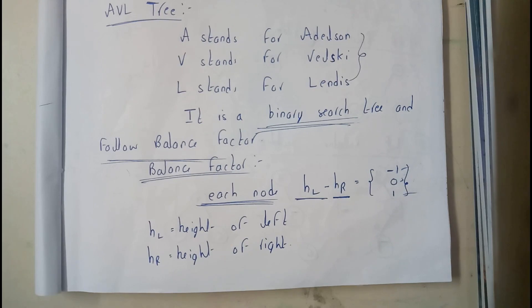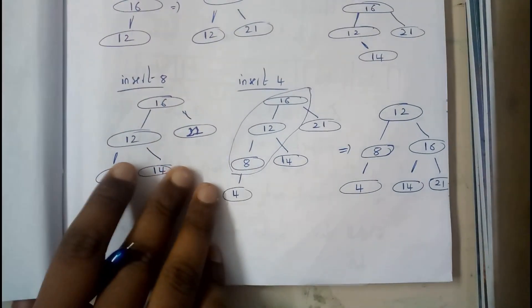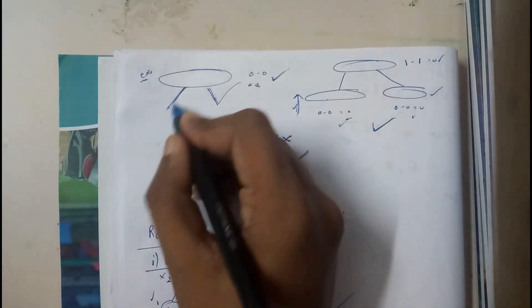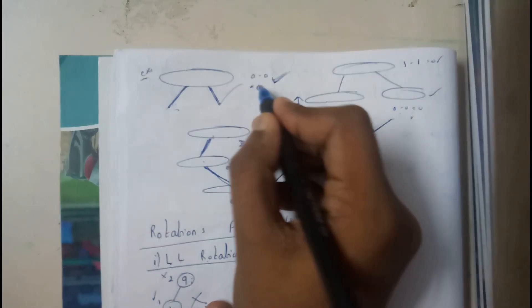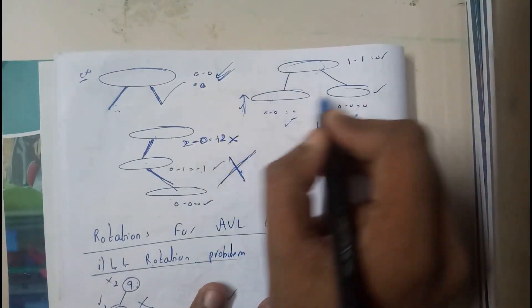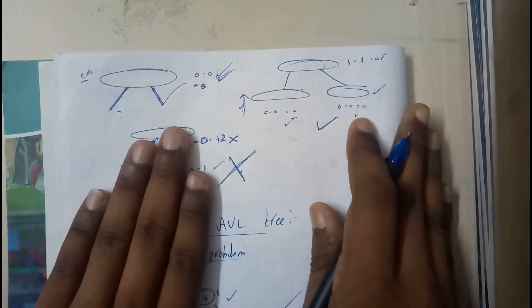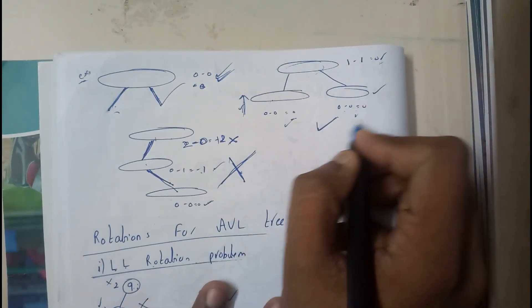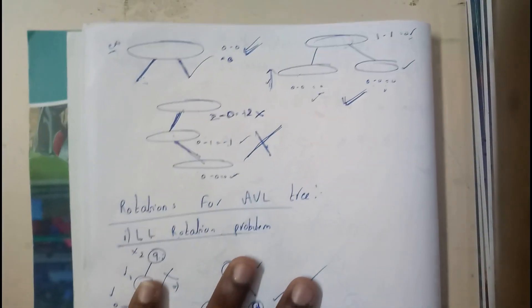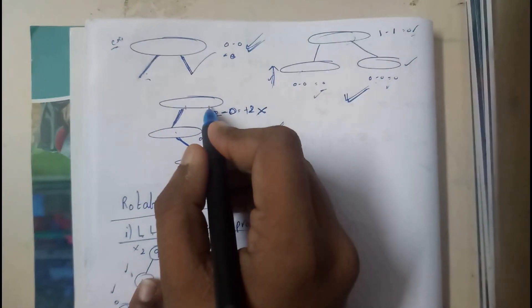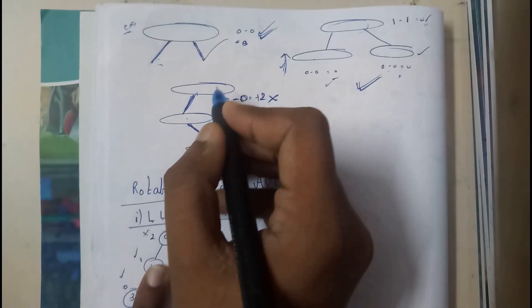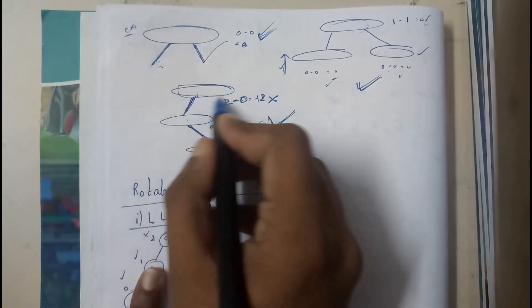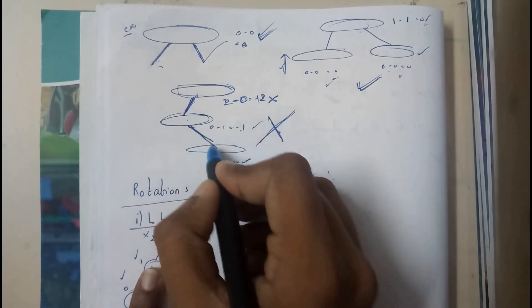Now I hope everyone got a small idea on AVL tree. Let's see an example. Here there is only the root with no children, so zero minus zero is zero — hence this follows the AVL tree. Similarly, a root with exactly one child on the right and one on the left follows it as well. With zeros all around, it's a perfectly balanced AVL tree.